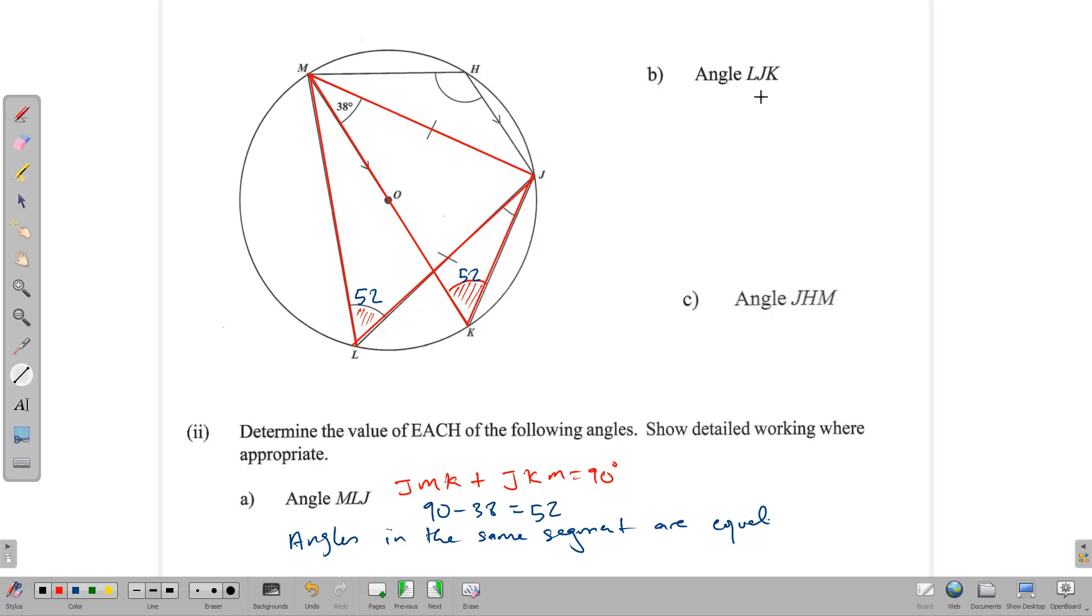So moving on to LJK, that's this tiny piece right here. That's the little piece that we want. To find LJK, we need to make use of the fact that this triangle here, MLJ, is isosceles.